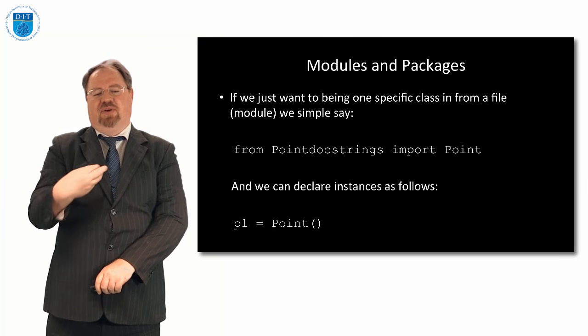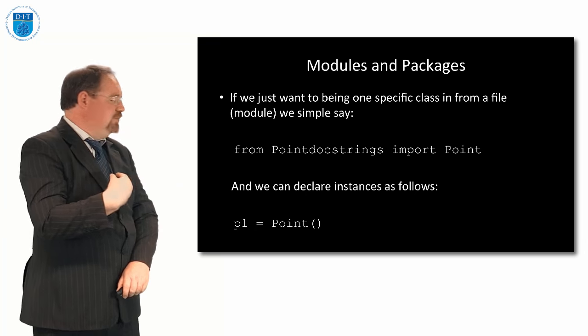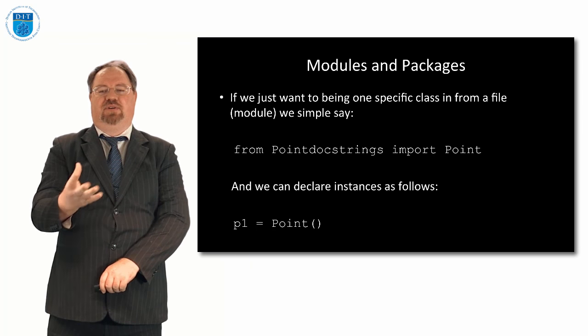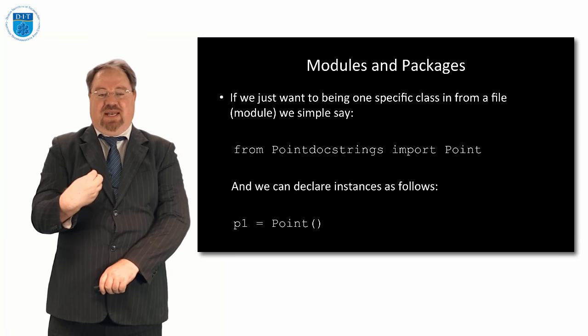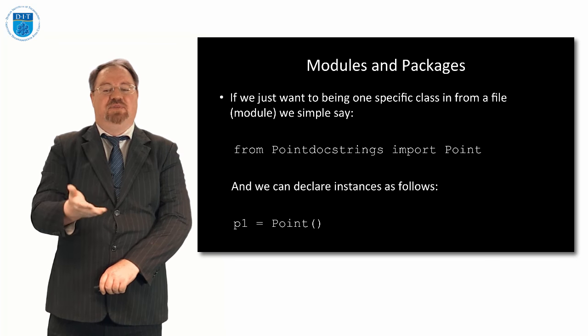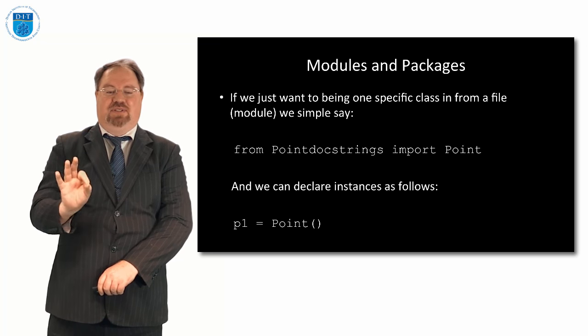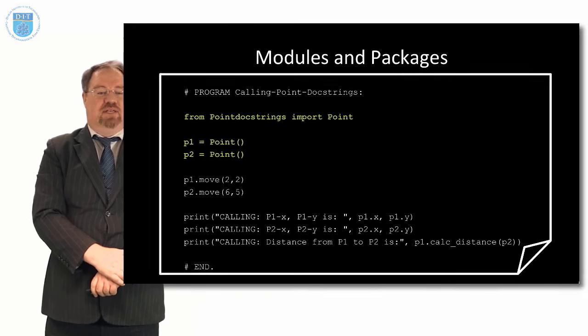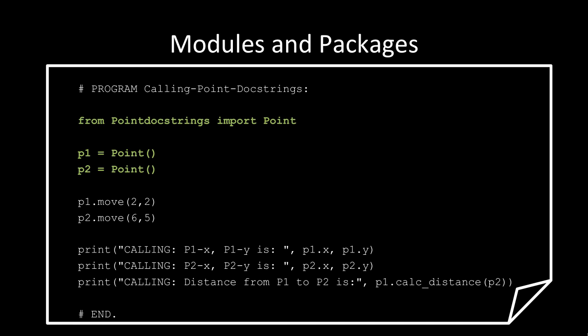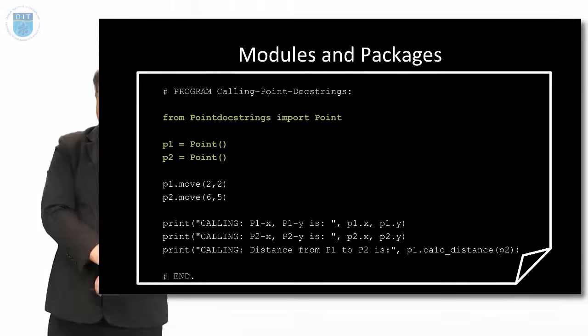If we didn't want to import the whole file — because import docstrings imports all the classes, all the methods, all the attributes — if we just want to import a specific class, we can say from docstrings import point, and then declare a point as before. In code that looks like: from docstrings import point. What we're saying is from a file, or module in Python terms, import a class, then use that class to create objects.